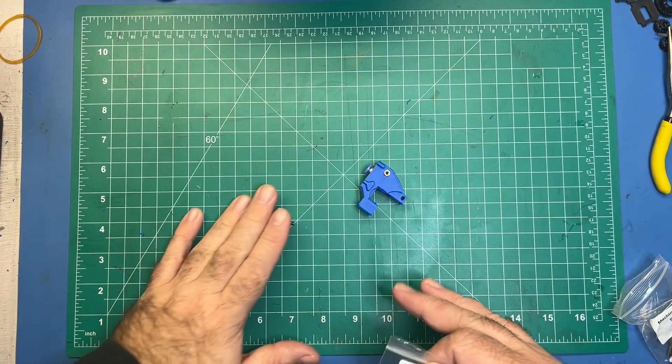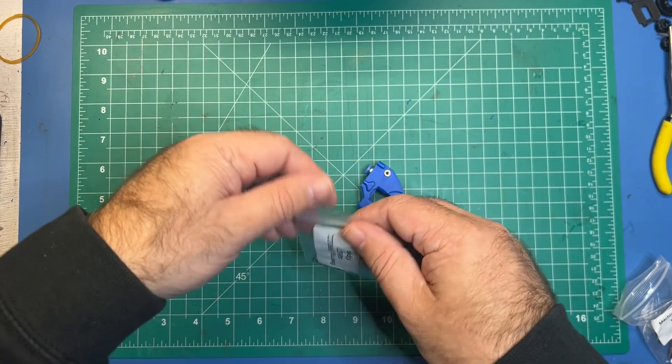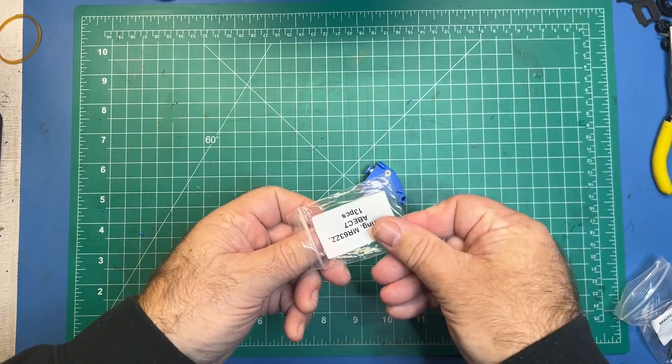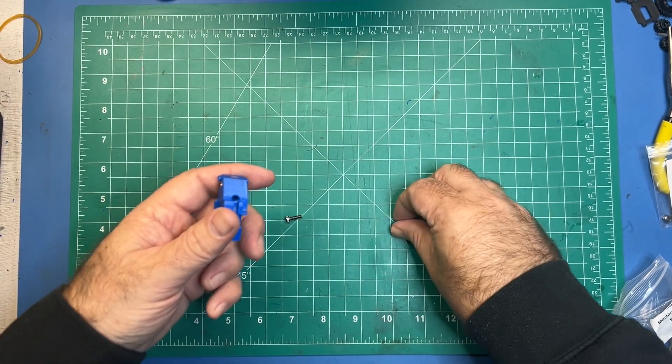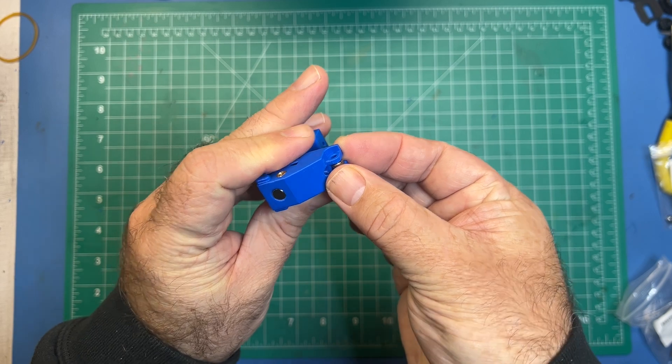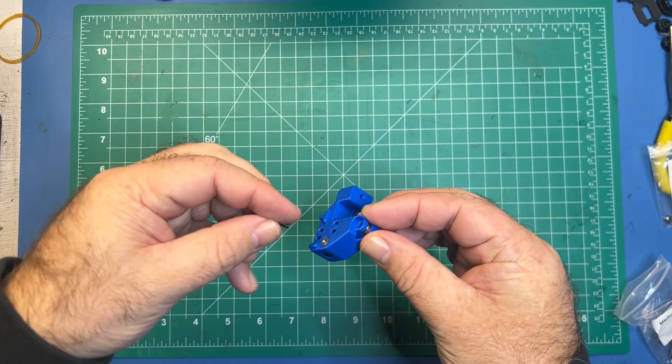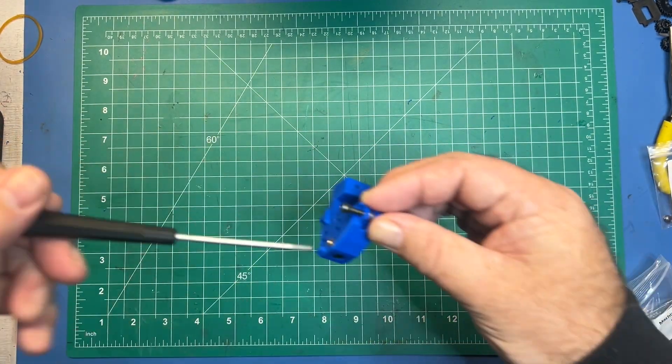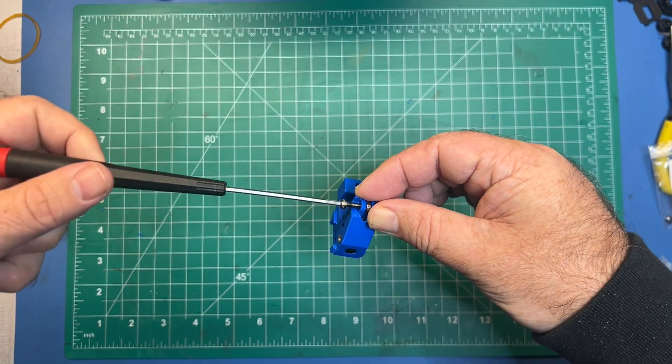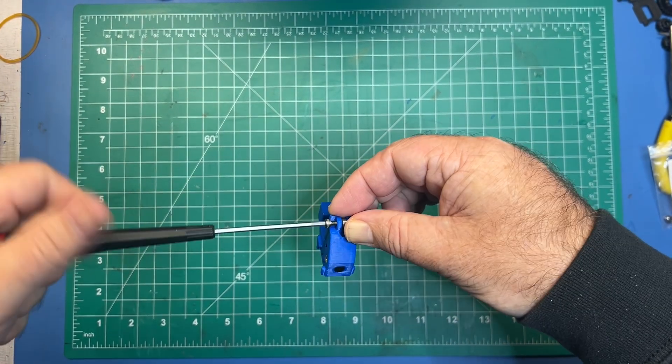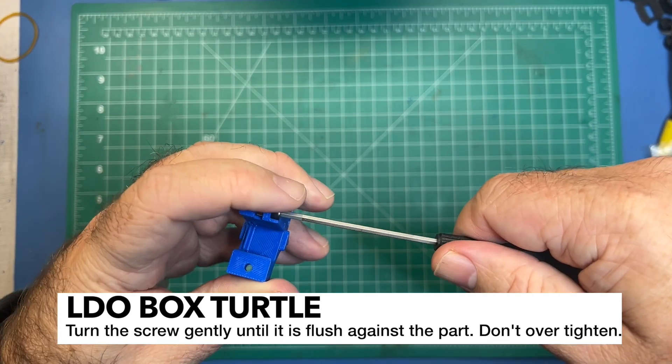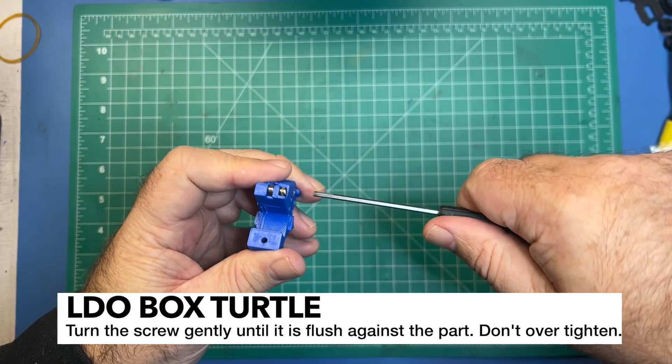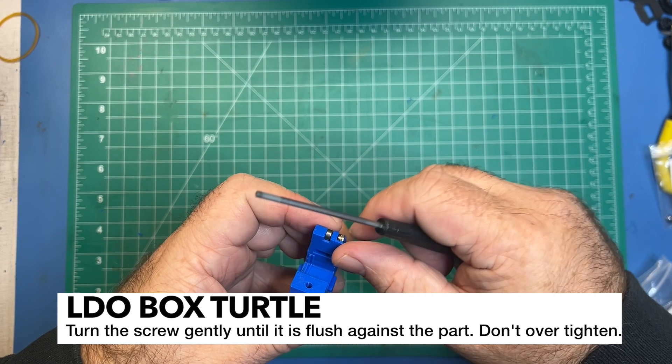And go ahead and gather an M310 and an MR63ZZ bearing. And for this step we're just going to come up here and insert the bearing into the slot here. And then follow that up with the screw behind it. And then just go ahead and tighten this down until the head is flush. You don't want to overtighten this. Wait until it's flush with that plastic part and you'll be good. And then just double check that everything moves and it does.